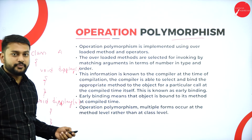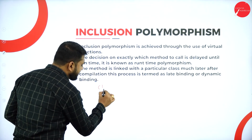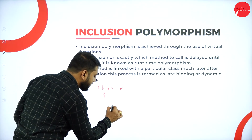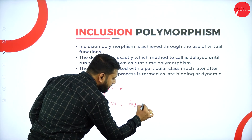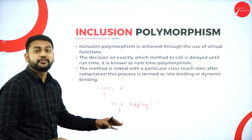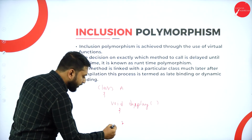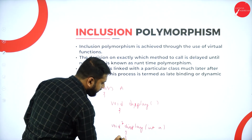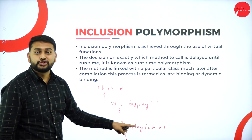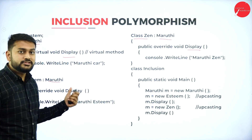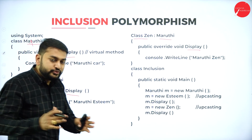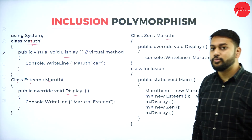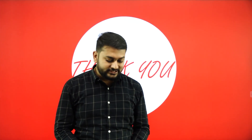So in operational polymorphism, you have the same method name — like void display — but with different number and type of parameters across methods in the same class. In inclusion polymorphism, you have one base class and use that same base class for inheritance across more than one subclass. With this, I have come to the end of the inheritance and polymorphism chapter. I hope I made it simple and easy to understand.